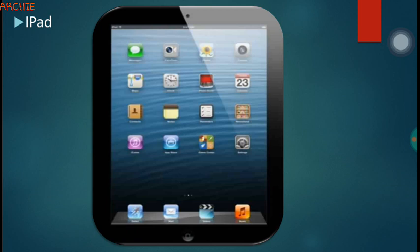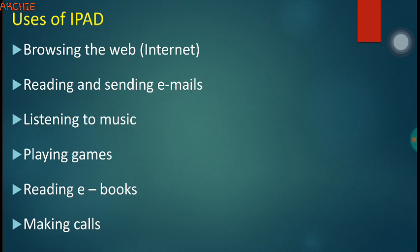The next device is the iPad, a digital device manufactured by the Apple company. There are other types which are also called tablets. This device can be used for browsing the internet for information, reading and sending emails, listening to music, playing games, reading ebooks, and making calls. Ebooks are electronic books that we download from the internet and read on our digital devices — they are saved on our devices, unlike physical books.